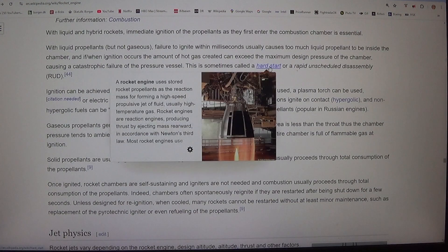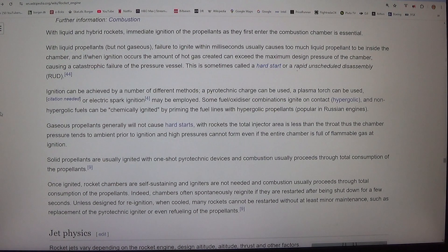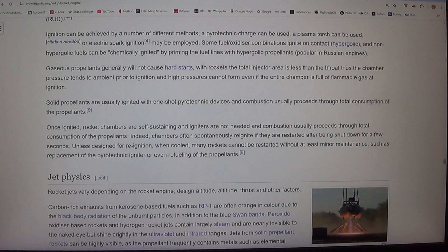Ignition can be achieved by a number of different methods. A pyrotechnic charge can be used, a plasma torch can be used, or electric spark ignition may be employed. Some fuel/oxidizer combinations ignite on contact (hypergolic), and non-hypergolic fuels can be chemically ignited by priming the fuel lines with hypergolic propellants, popular in Russian engines.